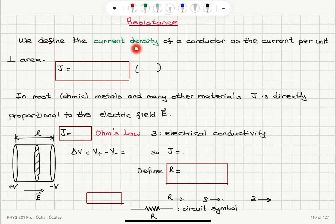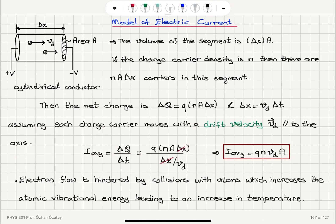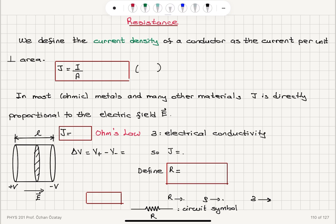Resistance. We define the current density of a conductor as the current per unit perpendicular area. We use J to denote current density — it is the current that flows per cross-sectional area A. Current is basically the charge Q for each charge carrier, times the carrier density N, times the drift velocity Vd, multiplied by area. So dividing by area gives J = QNVd. The SI unit of current density is amperes divided by meters squared.